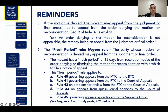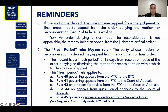If the motion for reconsideration is denied, the movant may appeal from the judgment or final order. The judgment or final order is the one being appealed; you do not appeal from the order denying the motion for reconsideration, because pursuant to Section 9, Rule 37, an order denying a motion for reconsideration is not appealable. The remedy is appeal from the judgment or final order.